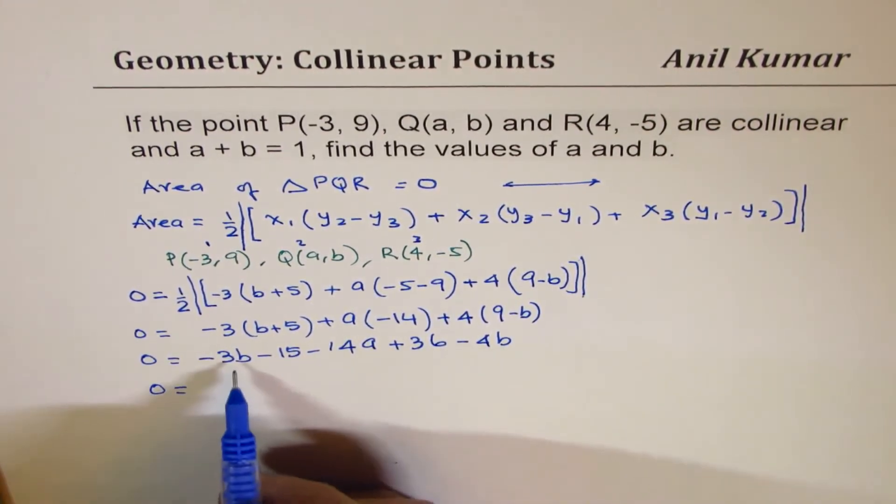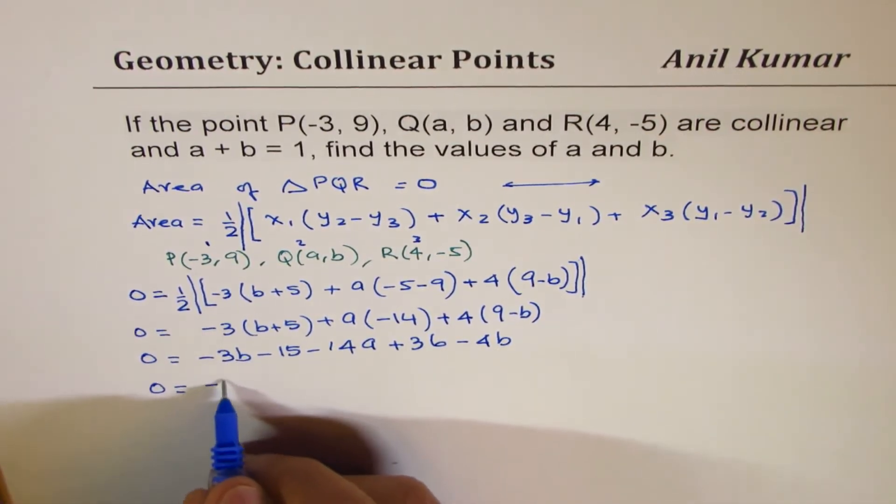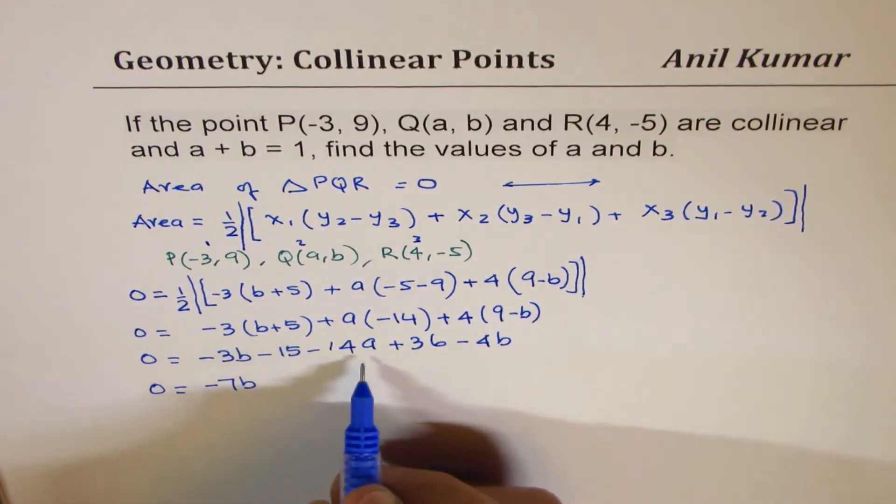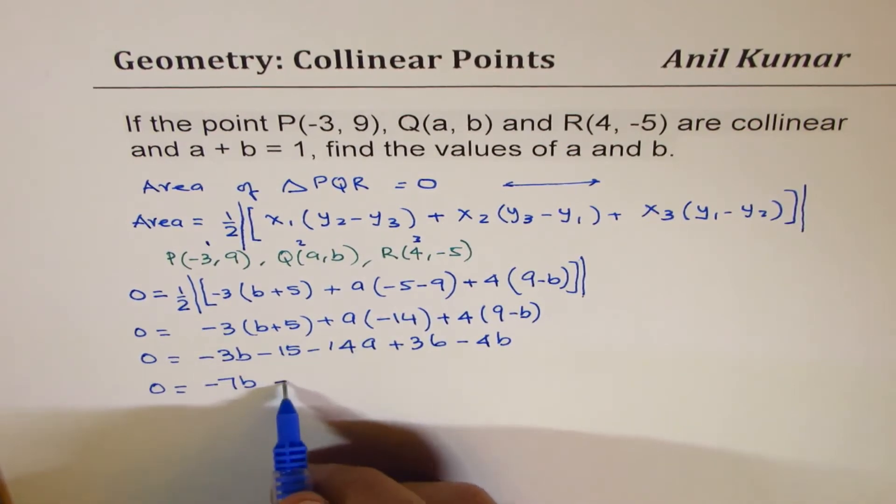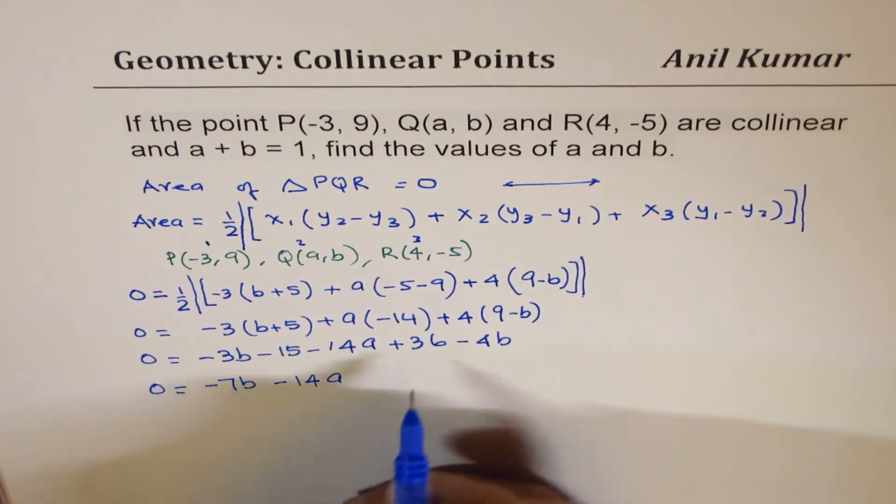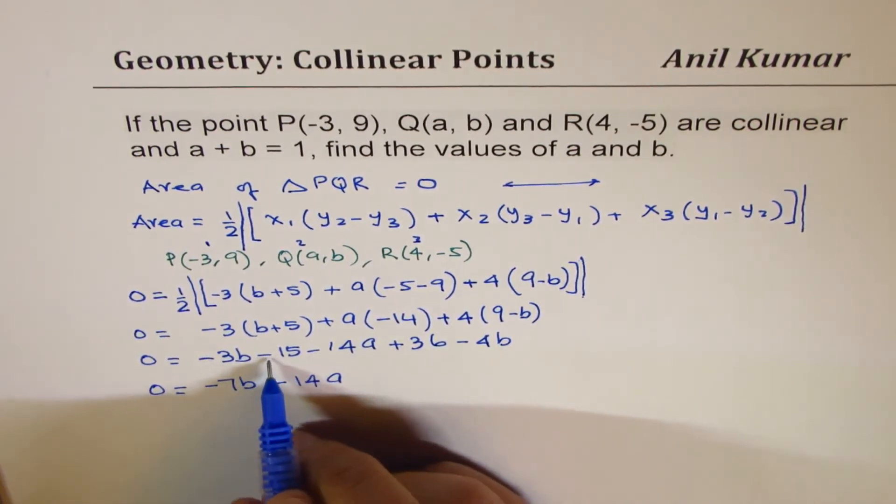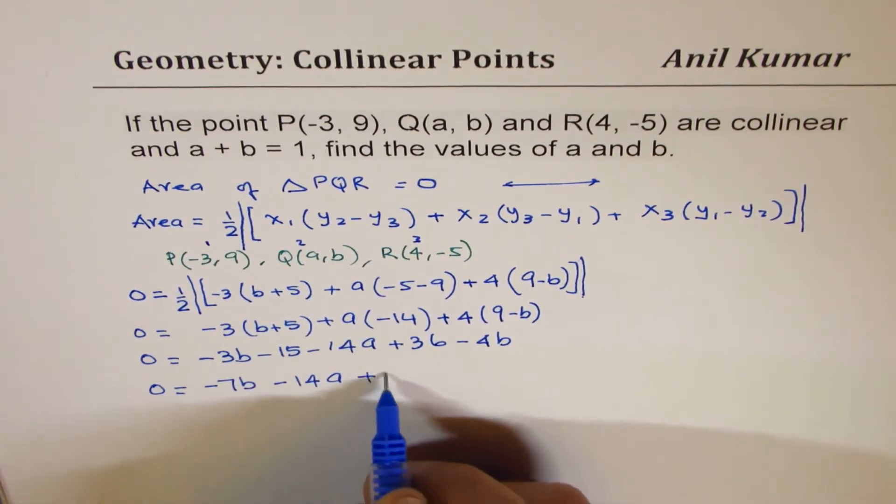Let's combine the terms. -4B minus 3B is -7B. As far as A is concerned, we have -14A, and 36 minus 15 is 21, so we have plus 21.